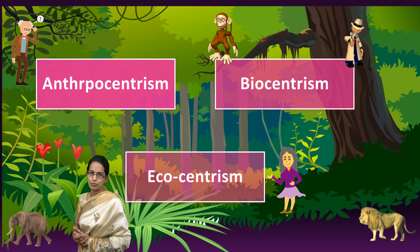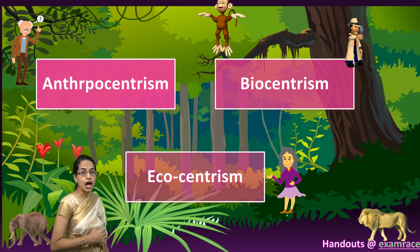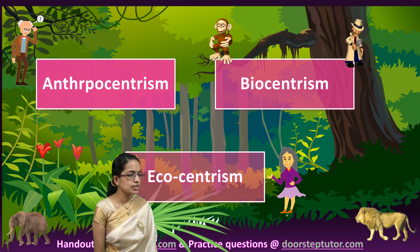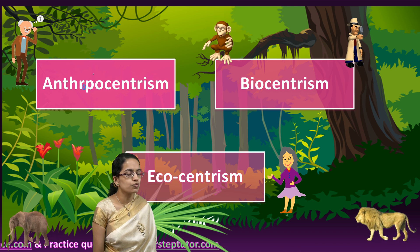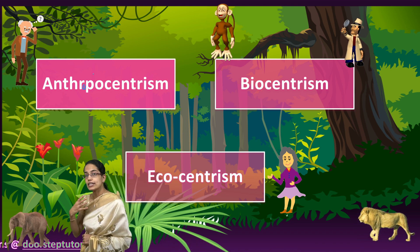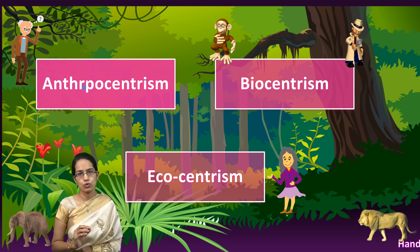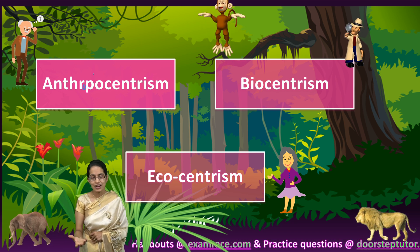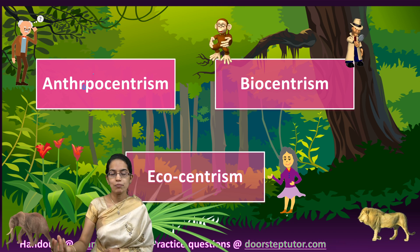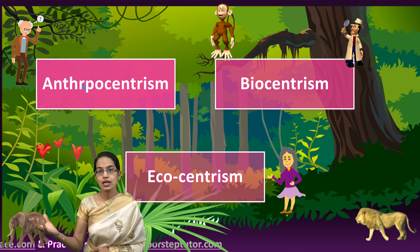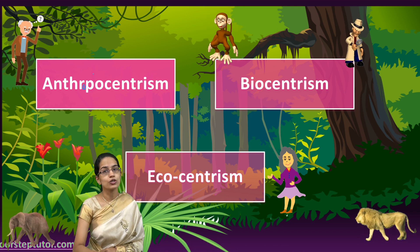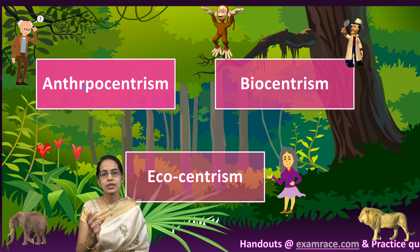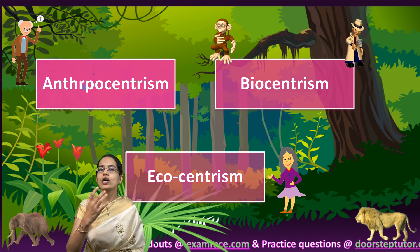There are three important approaches to study environmental ethics: anthropocentrism, biocentrism, and ecocentrism. Anthropocentrism focuses on the environment derived from human interest alone — how we want our surroundings to be, we make them accordingly. This is evident in how you design your own home, and the same logic applies to planet Earth. Anthropocentric means a human-based approach, founded on our interests alone.